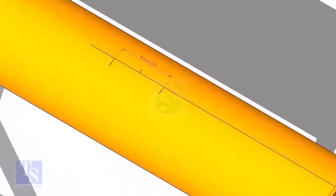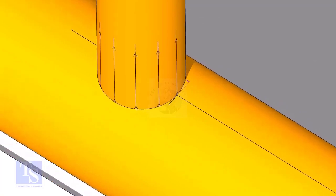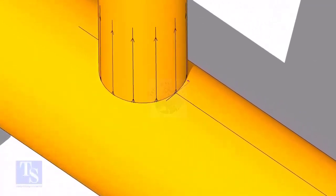Mark the branch OD on the center line of the header. Put the branch exactly on this marking, matching the branch center line.